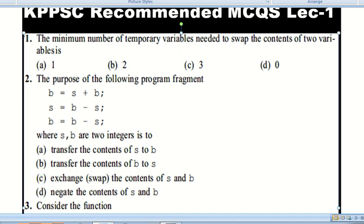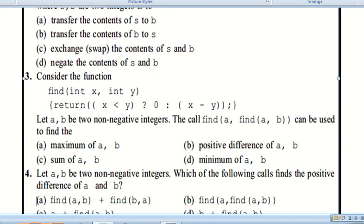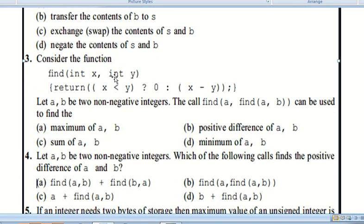Question number three: Consider the function find(int x, int y) with return value: if x less than y return 0, else x minus y. Let a, b be two non-negative integers. The call find(a, find(a, b)) can be used to find the minimum of a, b. Option D is correct.